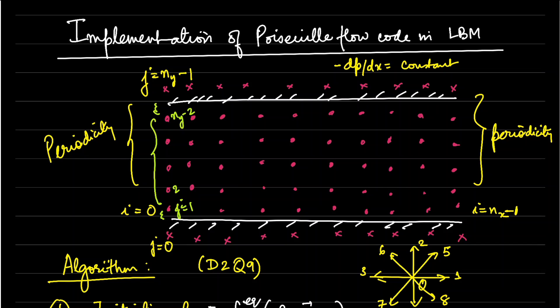Hello and welcome to this demonstration of the Lattice Boltzmann Method for Poisson flow. In this short lecture I will talk about how the Lattice Boltzmann Method can be used to solve a pressure-driven flow problem. For the problem we have a constant pressure gradient that the fluid experiences, and we have periodicity on the left and right side of the channel, which basically signifies that the channel is infinitely long.